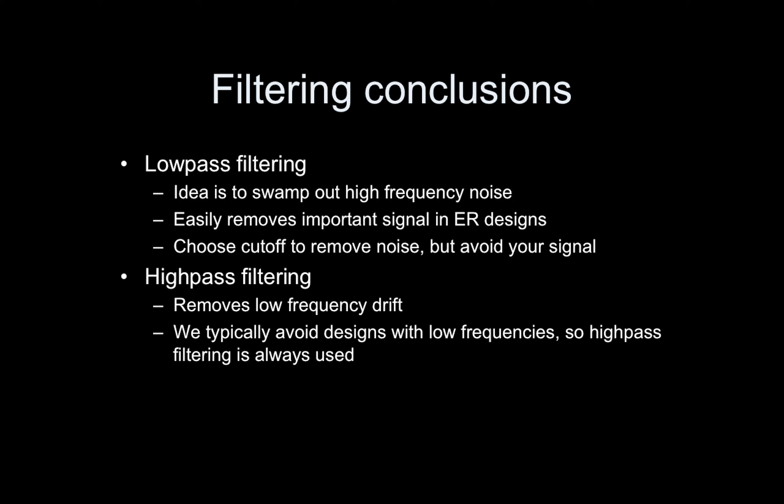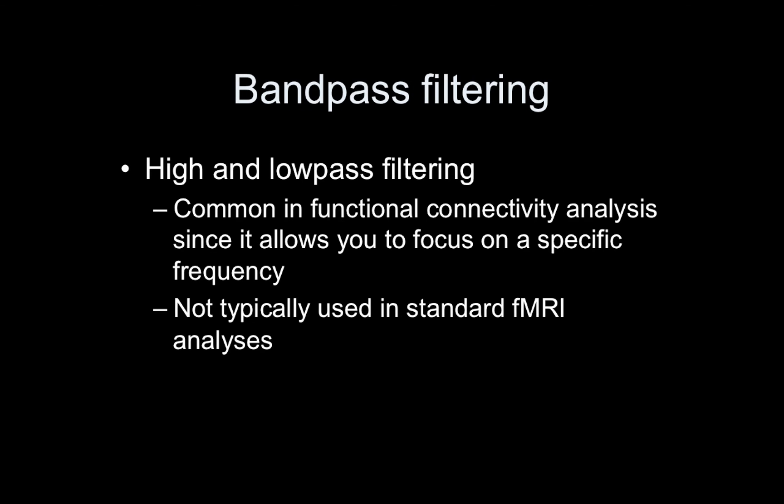So low-pass filtering — the idea is to swamp out high-frequency noise — but it easily removes important signal in event-related designs. You want to choose a cutoff to remove your noise but avoid your signal. We just typically don't use low-pass on task fMRI. We always high-pass — we always have to remove this low-frequency drift. So because of that, we avoid designs with low frequencies because we always high-pass filter. Know the difference: high-pass means keeping the high frequencies, getting rid of the low frequencies.